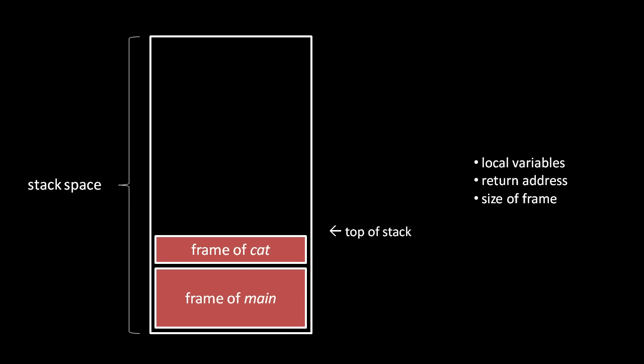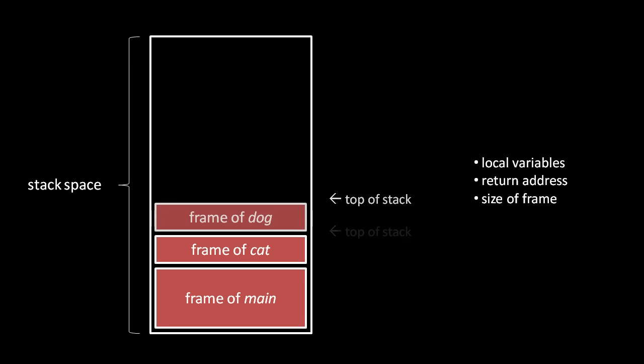When the main function itself invokes another function — let's call it cat — the local variables of cat are stored in another frame on top, along with the size of the frame and the return address, the address to jump back to when execution returns from cat.